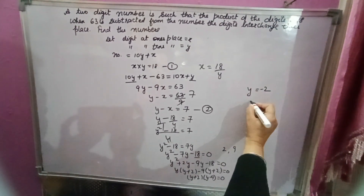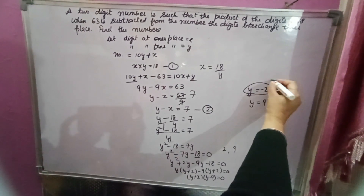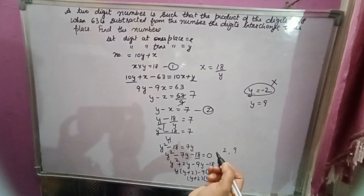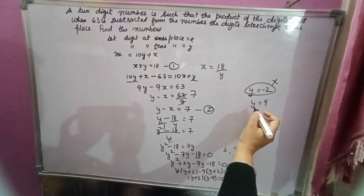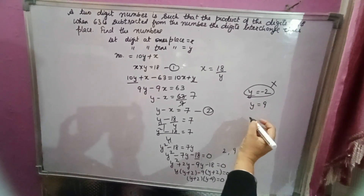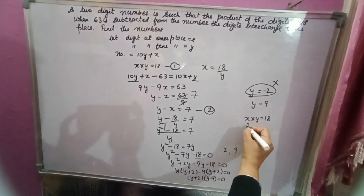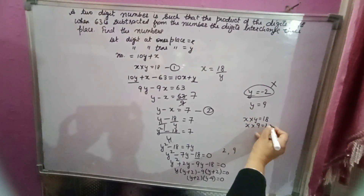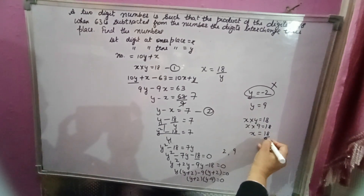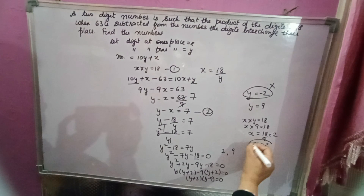So y equals 9 or y equals negative 2. We reject y equals negative 2 because a digit cannot be negative. Therefore y equals 9, which is the digit at the tens place. From the first equation, x into y equals 18, substituting y equals 9 gives x equals 18 over 9, so x equals 2.